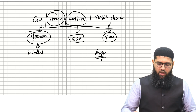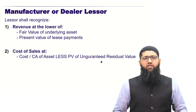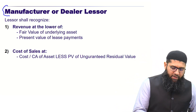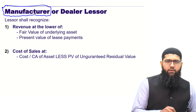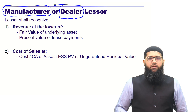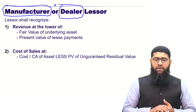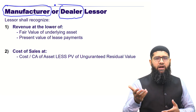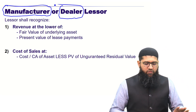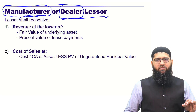When we talk about the concept of the manufacturer or dealer lessor, the name is self-explanatory: somebody who is manufacturing a product, or somebody who is acting as a dealer for a product, might not sell it outright but rather sell it on a lease or installment basis. Such a person is going to be considered a manufacturer or dealer lessor.